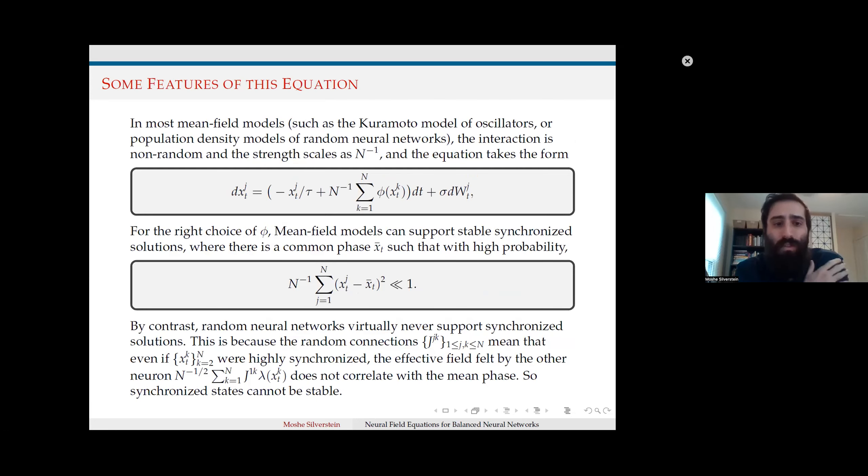This contrasts with most mean field models where interactions are not random and strength scales as one over N. Such models have been shown to support stable synchronized solutions due to the one over N scaling in the large N limit where we average out. However, random networks don't support synchronized solutions as the effective field does not correlate with the mean phase. The average effect has to permeate through this complicated network and has been shown that stable synchronization cannot be achieved.